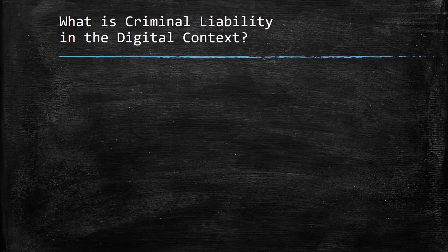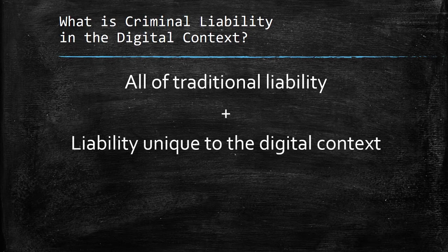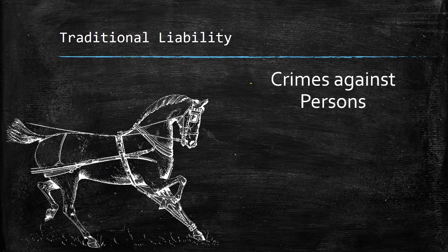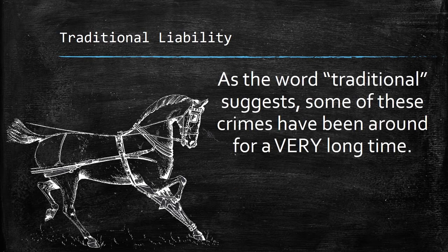So what is criminal liability in the digital context? You have all of traditional liability — what Judge Easterbrook would refer to as the law of the horse. You also have liability that's unique to the digital context that goes beyond what has been traditional. Traditional liability generally breaks down into crimes against persons, crimes against property, and crimes against the public. As the word 'traditional' suggests, these crimes have been around for hundreds or thousands of years.